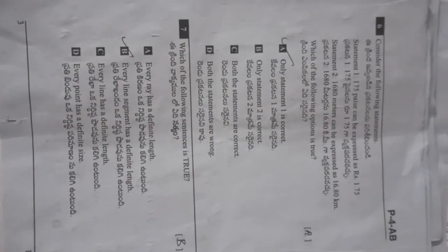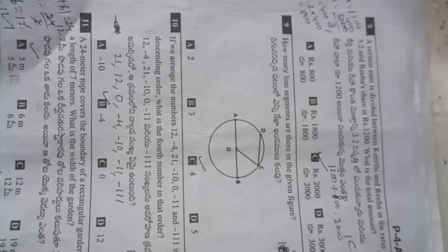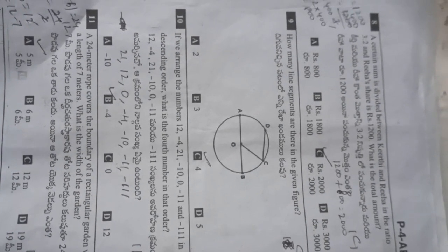Only statement 1 is correct. Next, which of the following sentences is true? Option B is correct: every line segment has a definite length. A certain sum is divided between Kirthi and Reha in the ratio 3 is to 2.